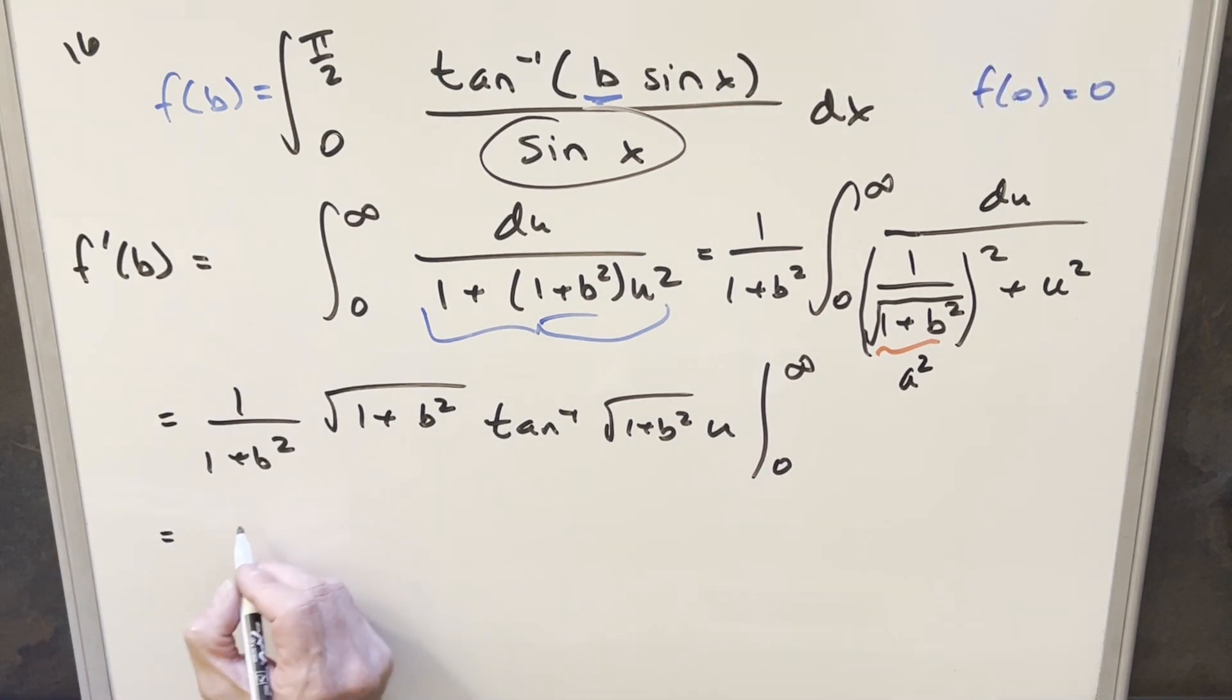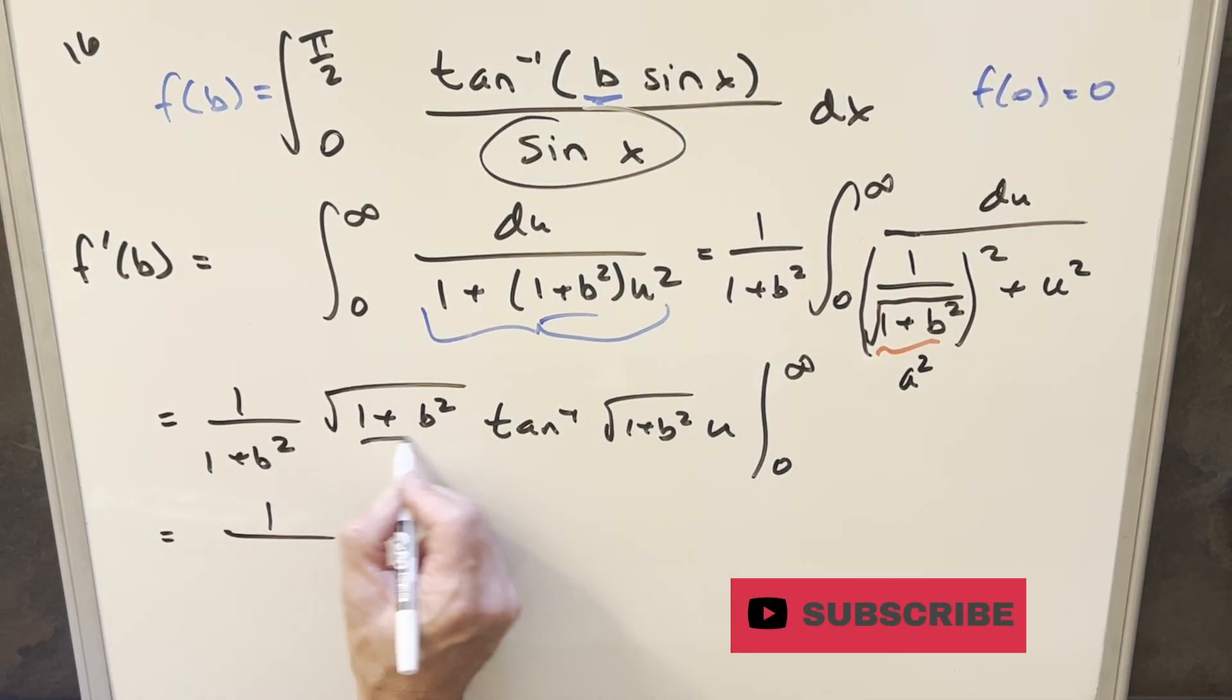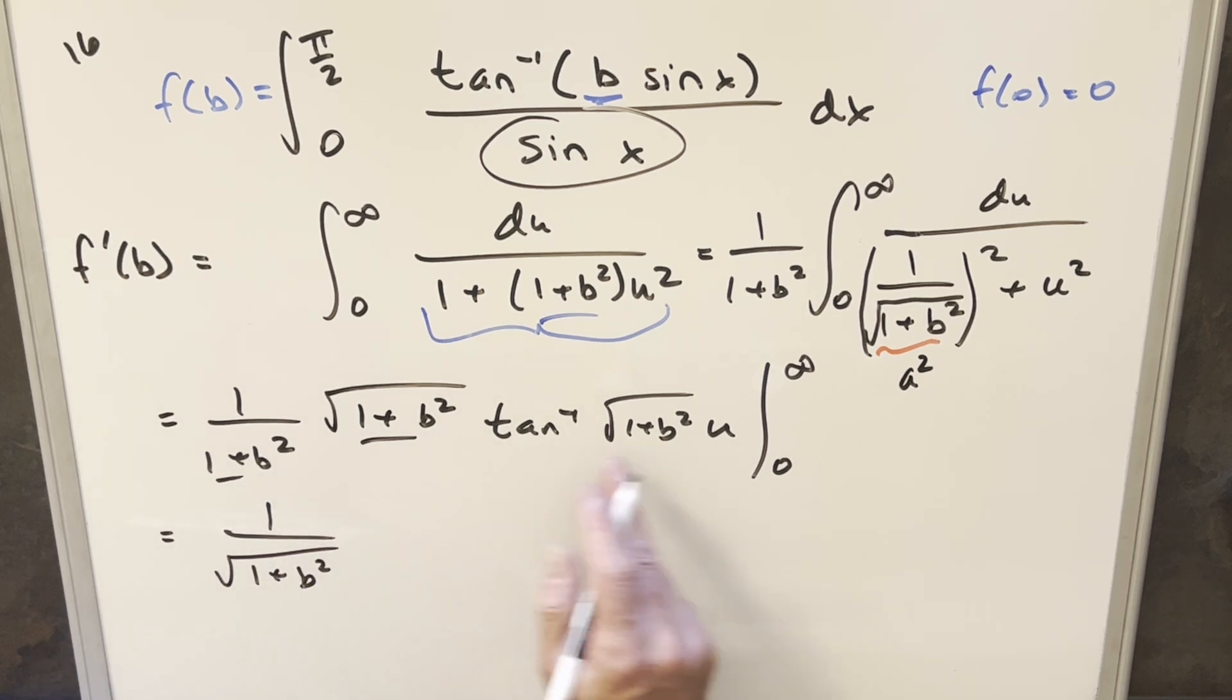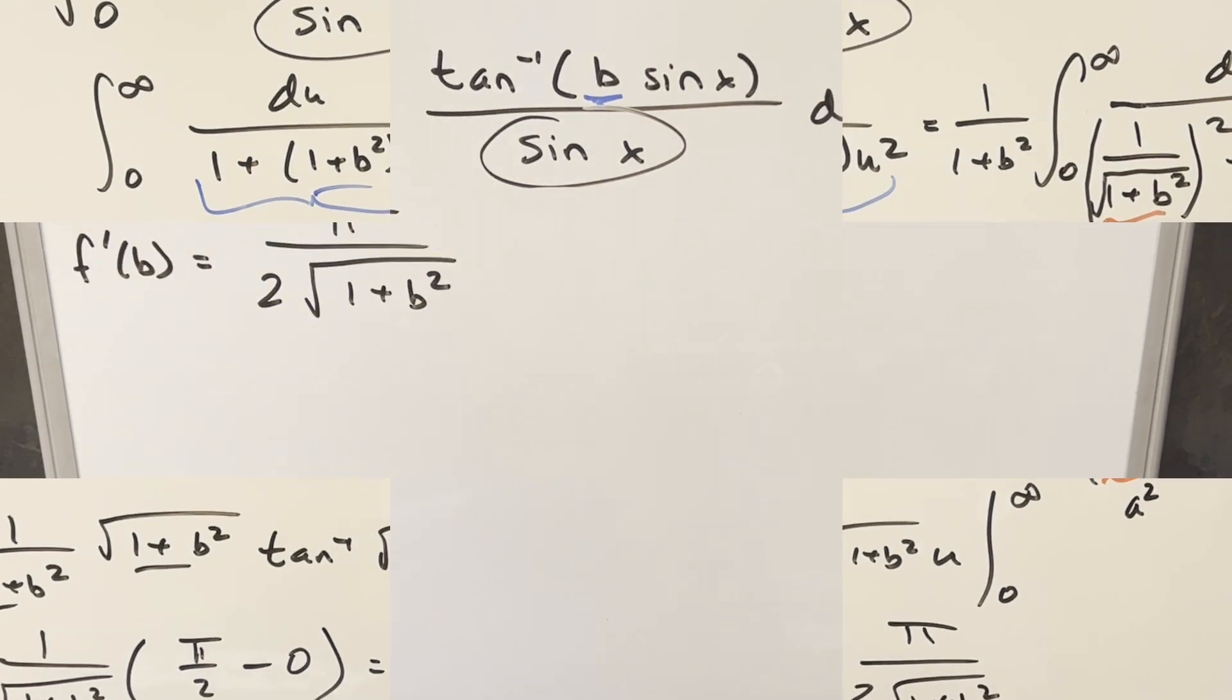I can take this first part right here and just give the same thing here and here. So combine these, I can write it as 1 over square root 1 plus b squared. Arctan at infinity is going to be just pi over 2. Then arctan at 0 is just 0. So for our f prime b value, we have just pi over 2 square root 1 plus b squared.